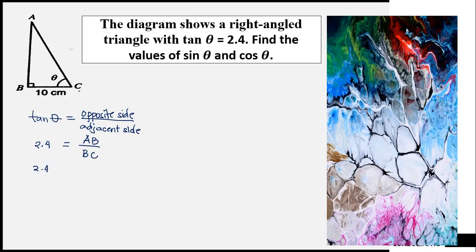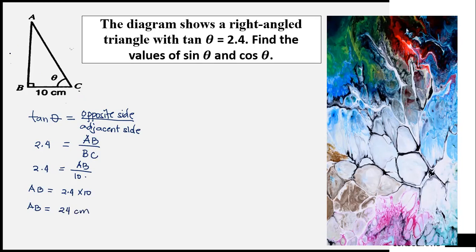So 2.4 is equal to AB — we don't have the measurement yet — divided by BC, which is 10 centimeters. So AB is equal to 2.4 times 10, which equals 24. So AB has a measurement of 24 centimeters.